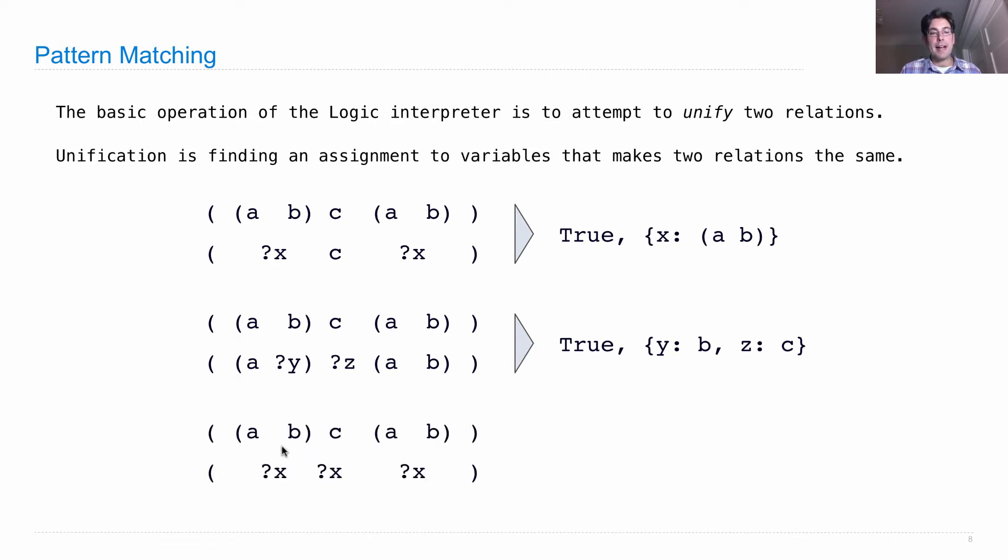And finally, what if I say I want one x such that when I substitute for x I get a, b, c, a, b? This will say false. Part of unification is discovering when it's impossible for two patterns to be the same, because this pattern is something repeated three times, and up here obviously we don't have anything repeated three times.